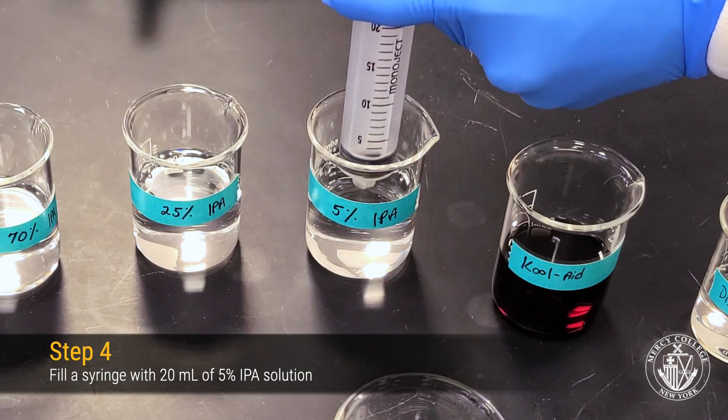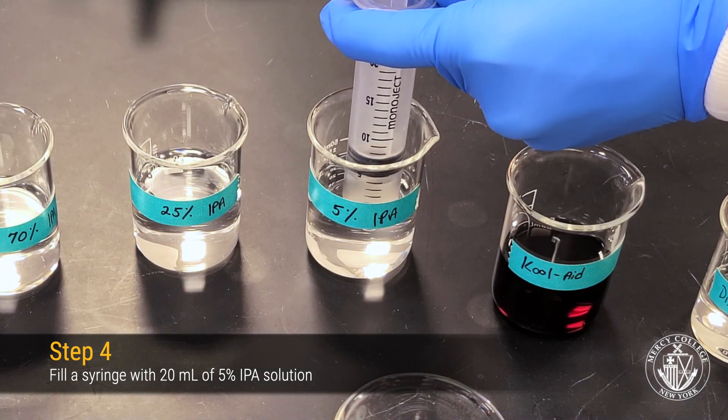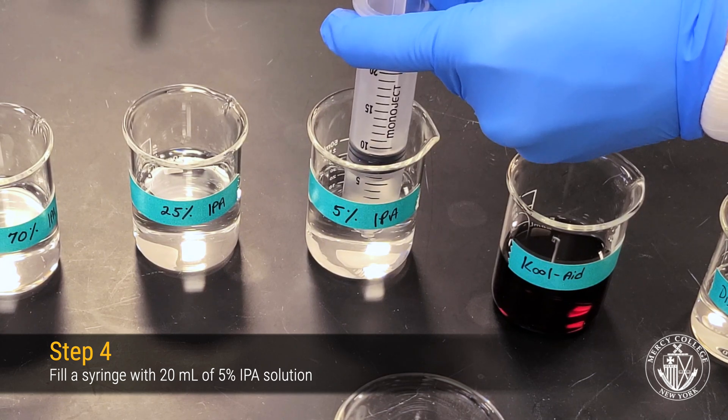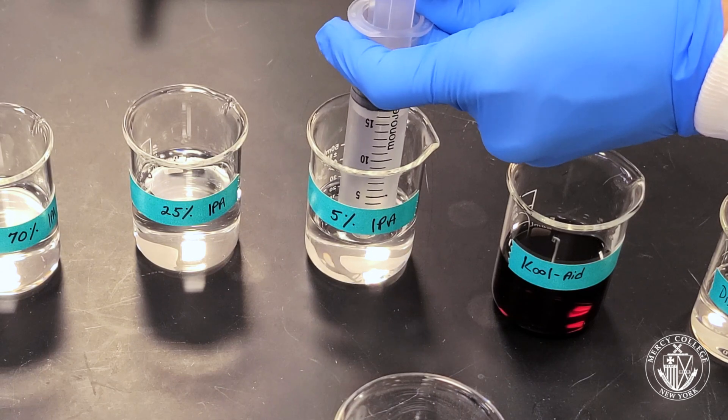In the next step, we're going to fill our syringe with 20 mL of 5% isopropyl alcohol. We're going to use the isopropyl alcohol in order to remove the red 40 color from the chromatography column.